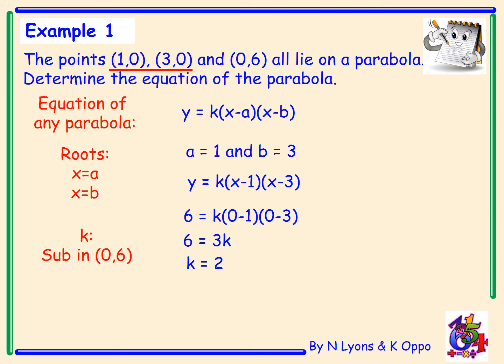Substituting k equals 2 back into the equation gives y equals 2 times x minus 1 times x minus 3. Multiplying out the brackets and rearranging into the general form of a quadratic gives y equals 2x squared minus 8x plus 6. That could then be graphed easily.